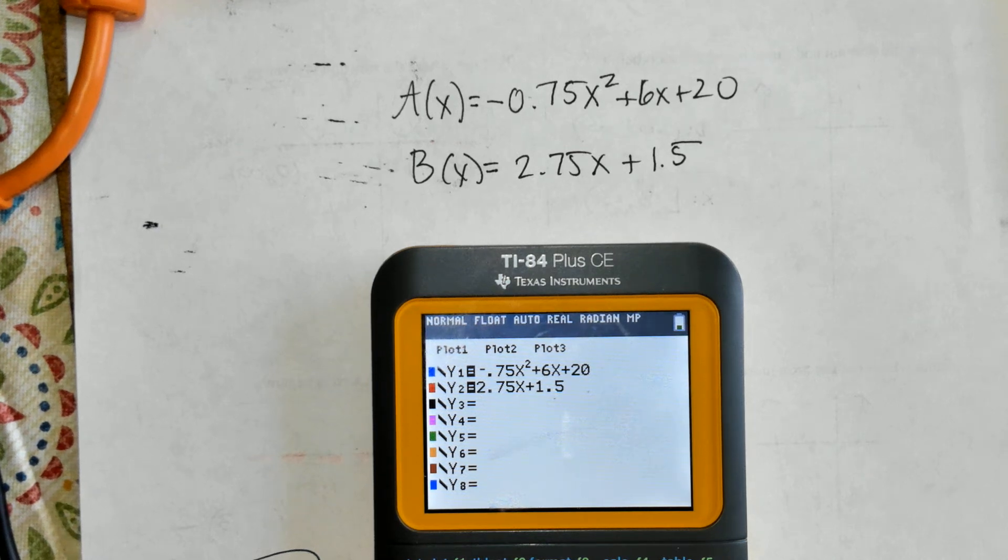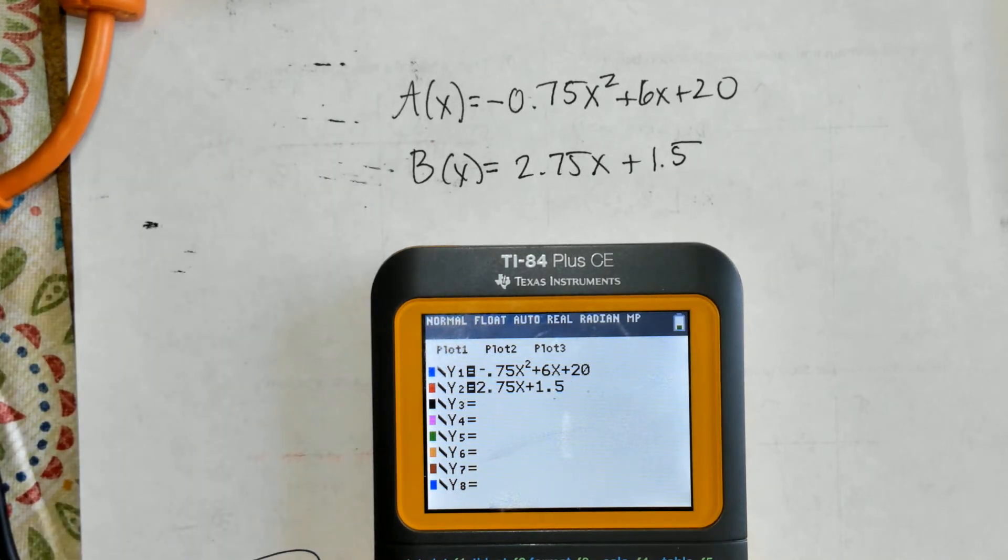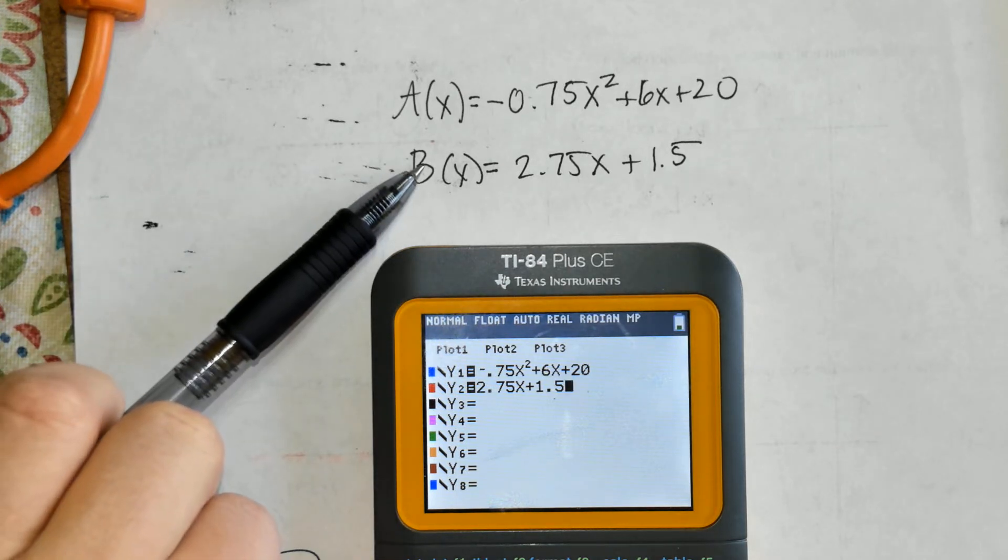The price of stock A of X over a 10-month period increased and then decreased according to this equation, where X is the number of months. The price of stock B increased according to this equation.